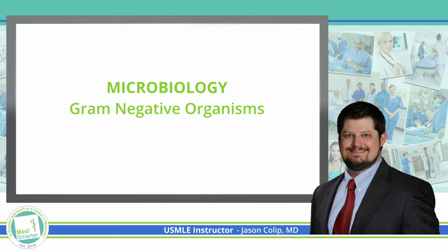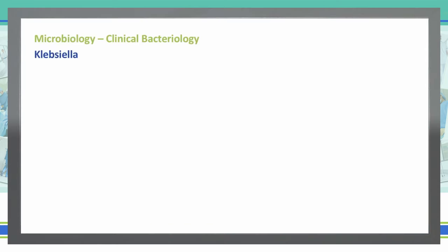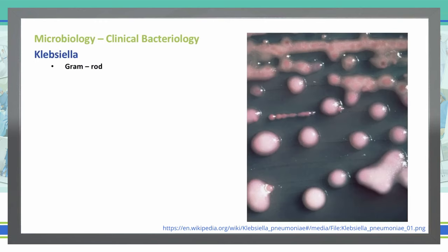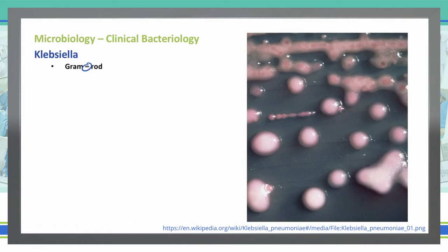Let's talk about that final lactose-fermenting enteric bacteria, which is Klebsiella. Klebsiella is a gram-negative rod. Most of the time, Klebsiella presents itself in patients who are diabetics or alcoholics — specifically alcoholics, who can become drunk and vomit, and actually aspirate some of that GI content into their lungs, so the intestinal flora gets up into the lungs, causing a lobular pneumonia in those patients who aspirate that gastric content.